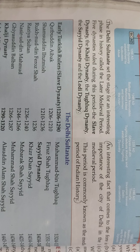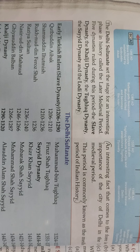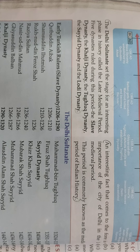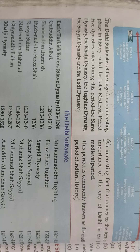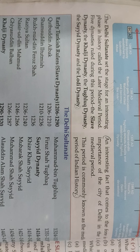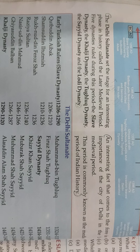The five dynasties were: Slave Dynasty, Khalji, Tughlaq, Sayyid, and Lodi. This is all interesting.